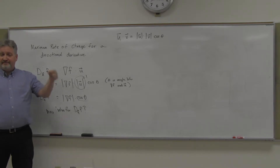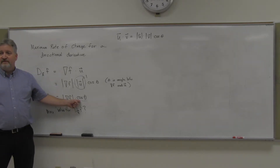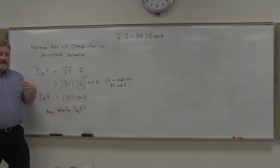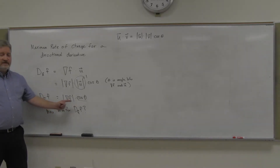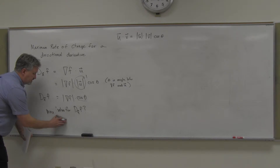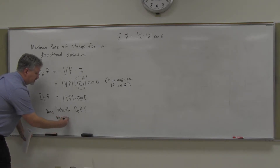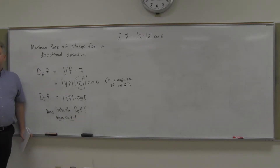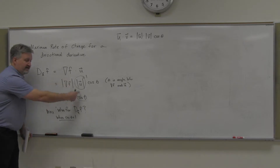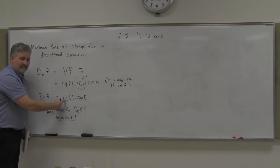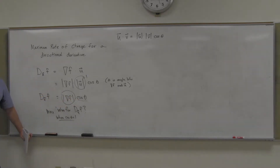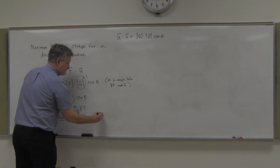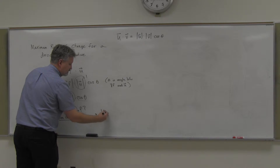The maximum value I could get out of this — wouldn't it be when cosine theta equals one? That would be the maximum, because in all other cases I'd be taking this times some decimal number like 0.9 or 0.7. The maximum value I'm going to get out of this is when cosine theta equals one. So the maximum value is magnitude of the gradient times one — the maximum value is the magnitude of the gradient. That's the maximum value a directional derivative can have.